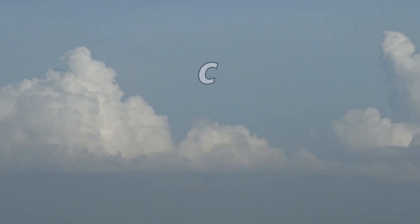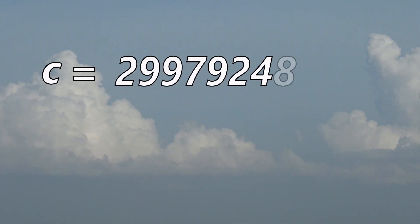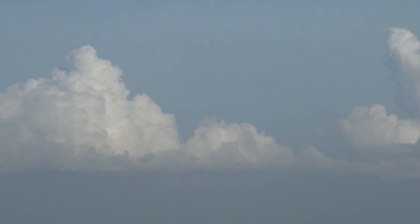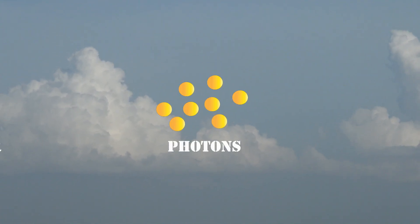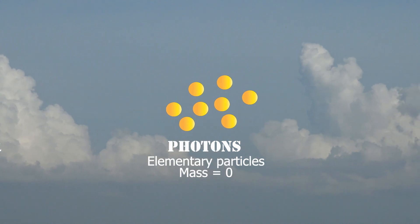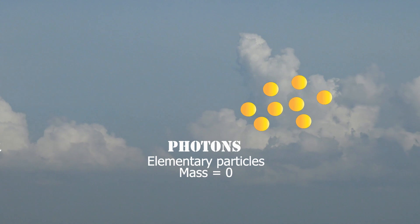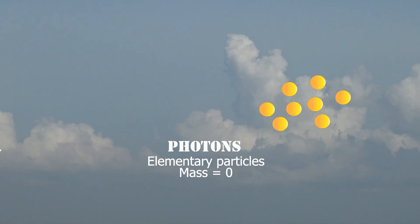To wrap our head around this mind-boggling idea, let's take a quick detour to explore the speed of light. C is a universal constant fixed at about 300 million meters per second. Light is made up of photons — elementary particles with zero mass that always travel through space at a fixed speed. Thus, the speed of light is always measured as C by every observer.